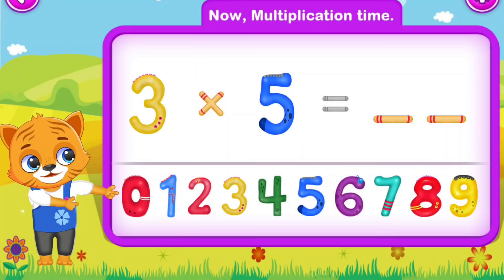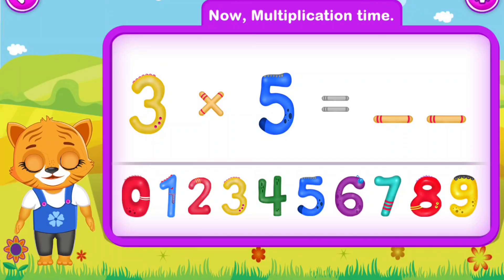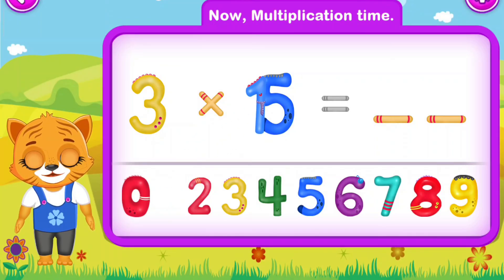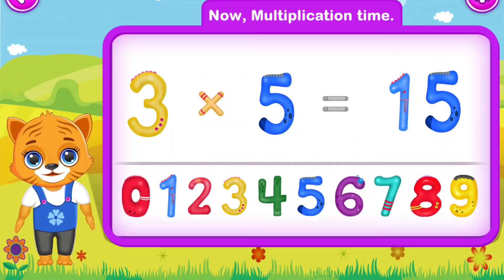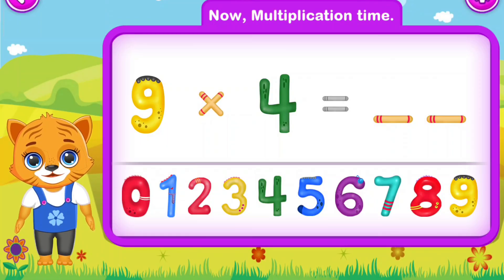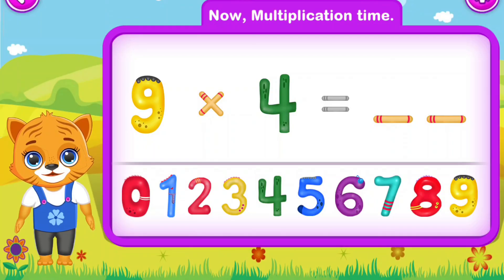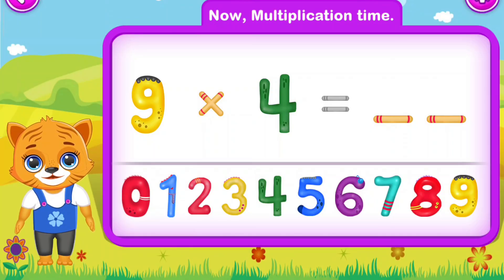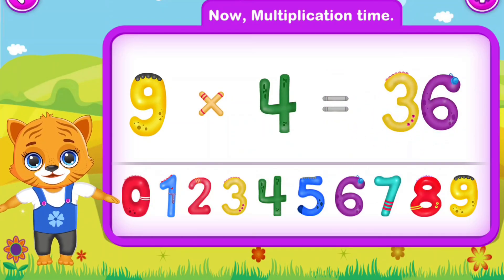Three multiply by five is equal to fifteen. You did a great job! Nine multiply by four is equal to thirty-six. Wow!